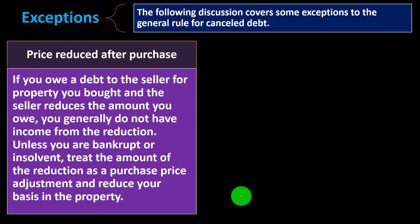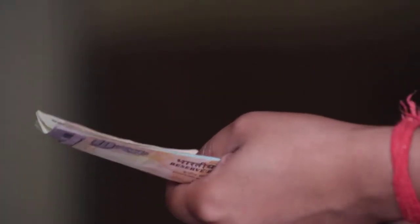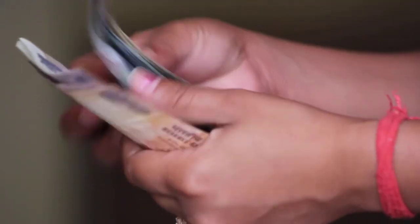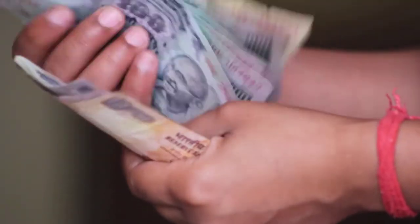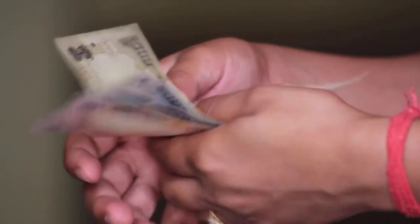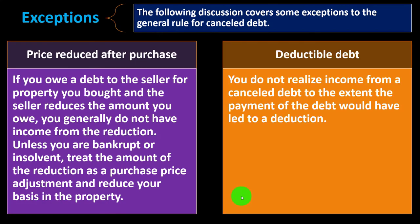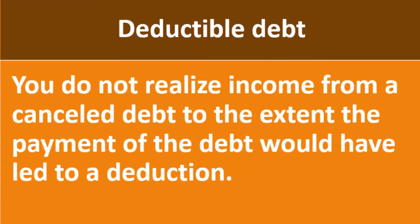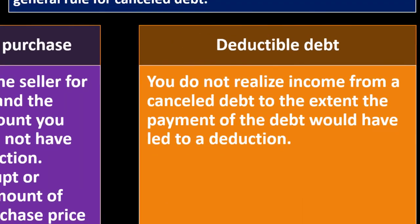In other words, if you purchase something and then before you pay them they reduce the amount you owe, instead of putting it on the books at the original higher amount and possibly having that reduction be income, you simply reduce the purchase price — reducing the basis in what was purchased. Then we have deductible debt: you do not realize income from a canceled debt to the extent the payment of the debt would have led to a deduction.